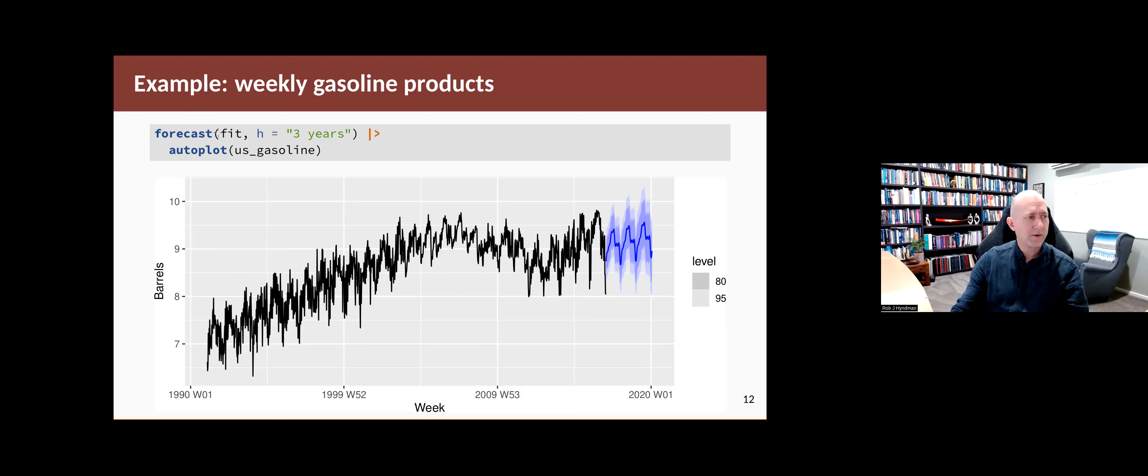So if we now go ahead and forecast for the next three years, we can see that there's the increasing trend, which has captured the trend in the overall data and the seasonality you can see there is picking up the shape of the changes across the year. Quite wide prediction intervals because there's a lot of noise in this data set.